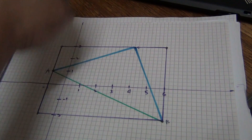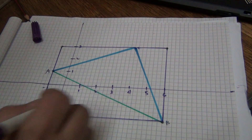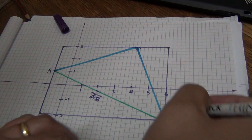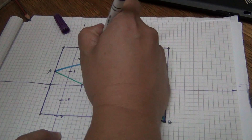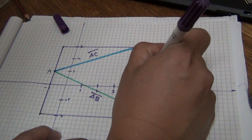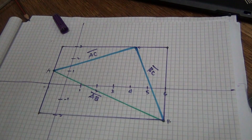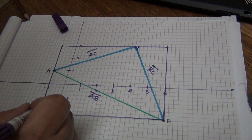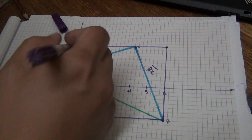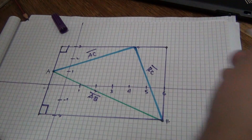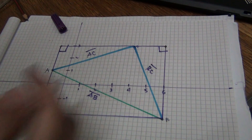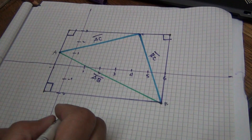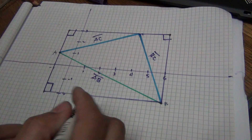By doing that I can now know the distance of these lines which need to be identified as part of the problem. Here I will know the distance of segment A to B, segment A to C, and segment B to C. From here you can see that I have right angles, so we go back to the Pythagorean theorem.